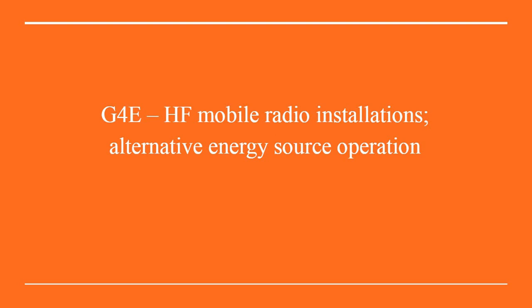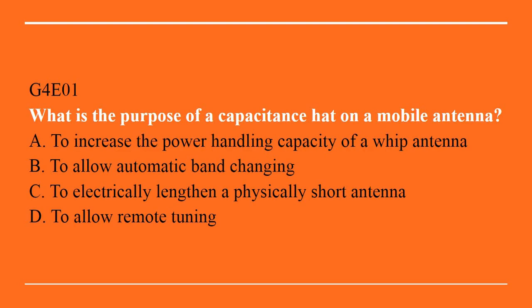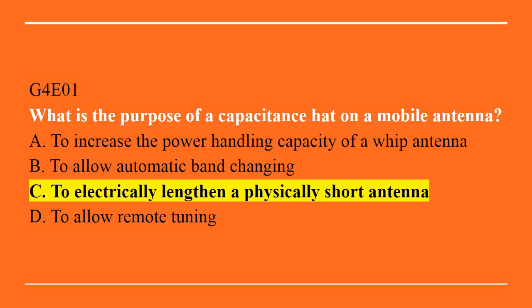G4E covers HF mobile radio installations and alternative energy source operation. G4E01: What is the purpose of a capacitance hat on a mobile antenna? A. To increase the power handling capacity of a whip antenna. B. To allow automatic band changing. C. To electrically lengthen a physically short antenna. Or D. To allow remote tuning. The correct answer is C. To electrically lengthen a physically short antenna.